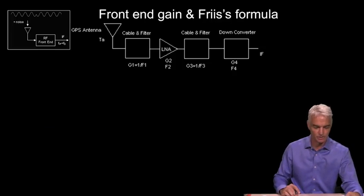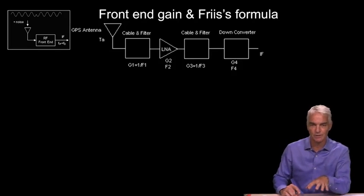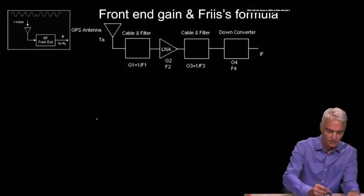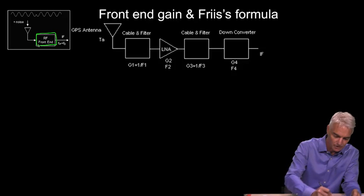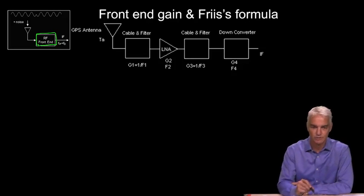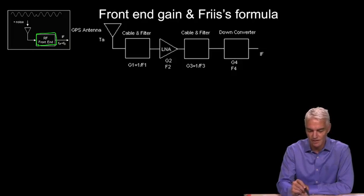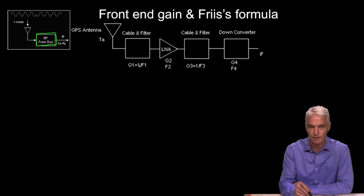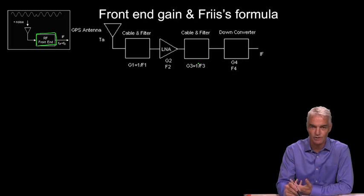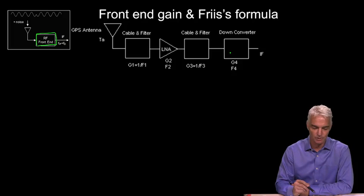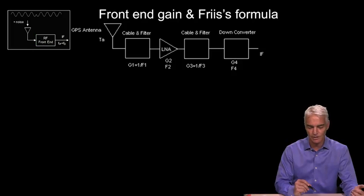We're now going to focus on the front end — the analog part — and analyze that. We put that up in the top left and break out the representative block diagram of what the inside of that front end looks like. You'll have the antenna, and then inside the front end a chain of filters, amplifiers, and down converters. By showing one filter up front, a low noise amplifier, another filter, and a down converter, that's general enough to analyze any particular receiver. Other receivers may have another filter, another down converter, and so on, depending on the receiver design.